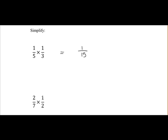Next one, 2 over 7 multiplied by 1 over 2. So it's top by top, 2 by 1, which is 2. Bottom by bottom, our numerator multiplied by the numerator, which is 7 by 2, which is 14.